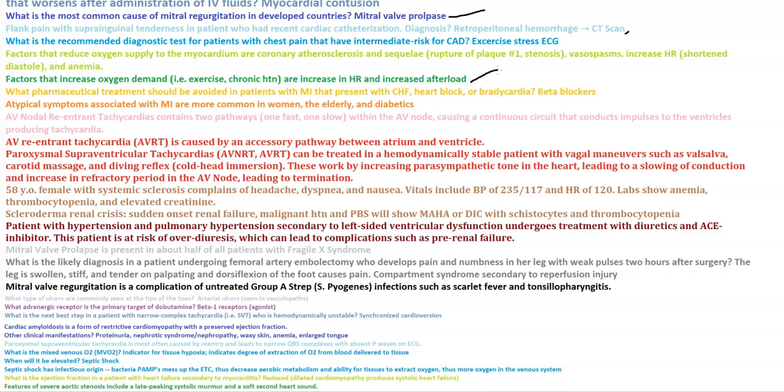Atypical symptoms associated with MI are more common in women, the elderly, and diabetics. AV nodal reentrant tachycardias contain two pathways — one fast and one slow — within the AV node, causing a continuous circuit that conducts impulses to the ventricles producing tachycardias. AV reentrant tachycardia, AVRT, is caused by an accessory pathway between the atrium and the ventricle.